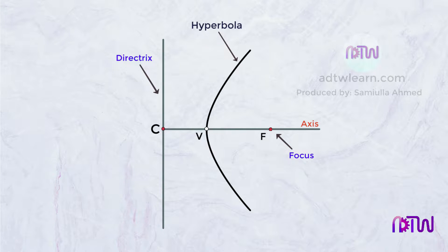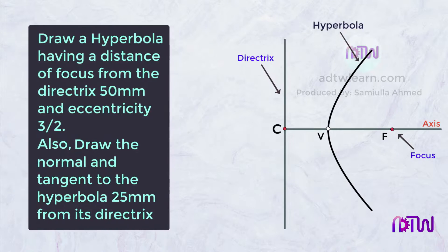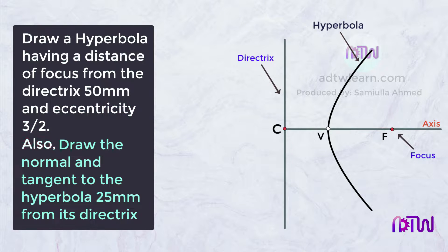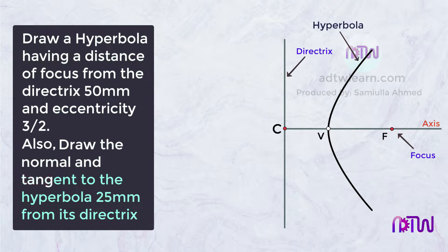Here are the instructions for drawing the hyperbola. Draw a hyperbola having the distance of focus from the directrix 50mm and eccentricity 3/2. Also, draw a normal and tangent to the hyperbola at 25mm from its directrix.